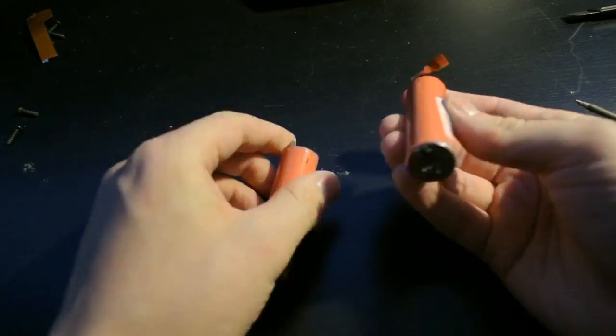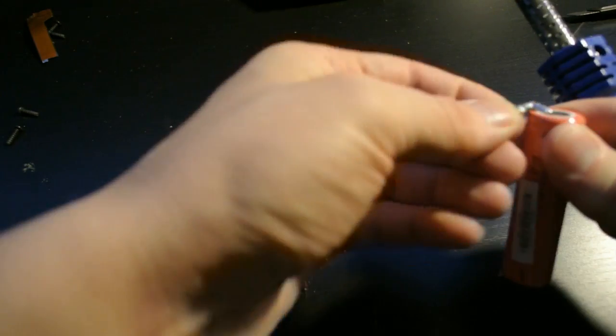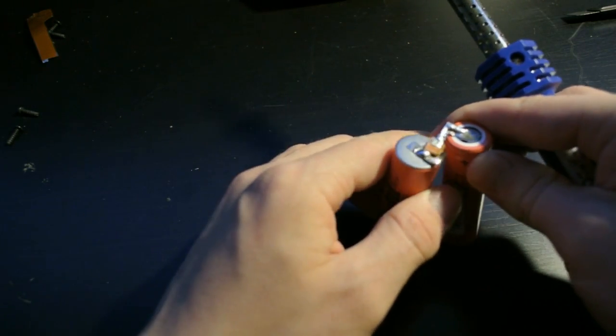Now before we wire our new batteries inside the drill let's make them in series and use some tape to hold them together so that they don't rattle around and cause issues.